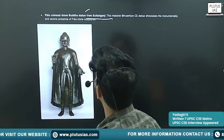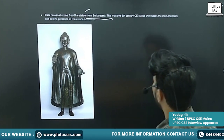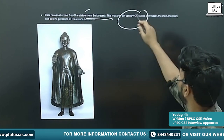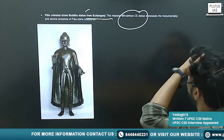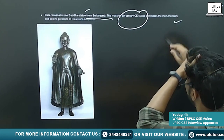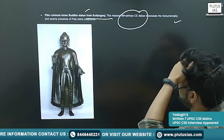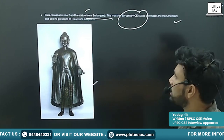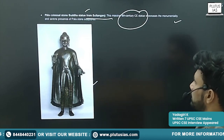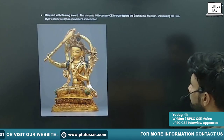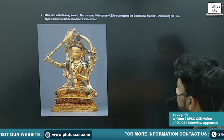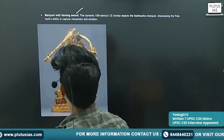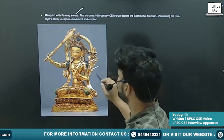Next is the colossal stone Buddha statue from Sultanganj — an 8th century statue that showcases the monumentality and serene presence of Pala stone sculptures.